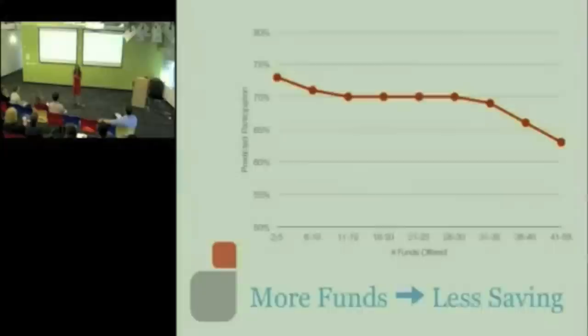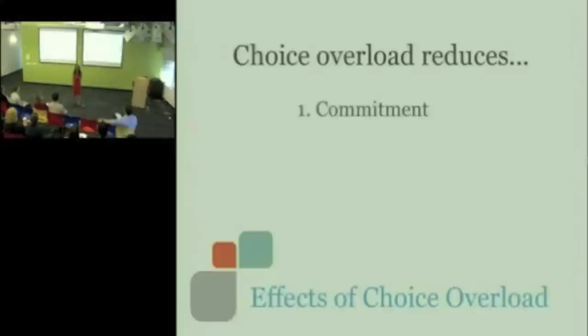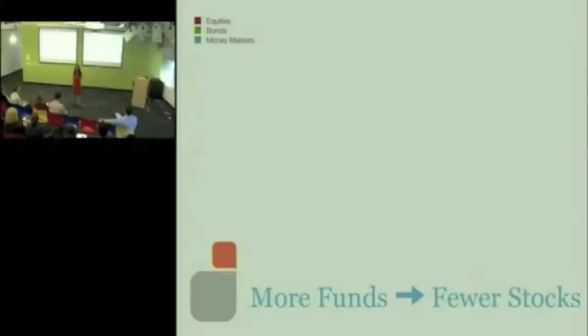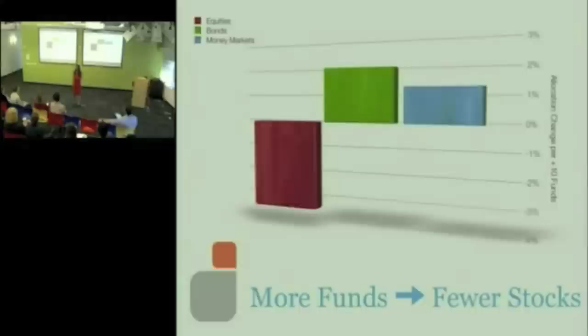So, first consequence, the more choices people have, more likely they are to delay and procrastinate even when it goes against their best self-interest. Second consequence, the more choices people have, the more likely they are to make inferior choices, worse choices. So, let's just stick to the 401k decision. The more choices people have, even when you look at the people that actually chose to participate, the more choices they had, the more likely they were to put all their money in money market accounts. We all know that's a dumb decision. It doesn't even grow at the rate of inflation.